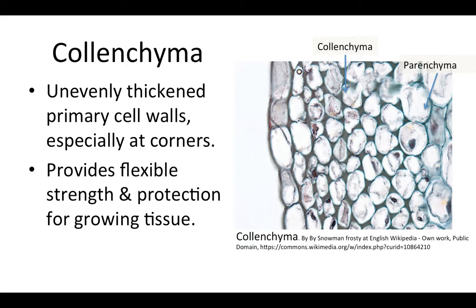We'll move on now to talk about collenchyma. Collenchyma, like parenchyma, only has primary cell walls. So that's a similarity, but the difference is that the cell walls of collenchyma are unevenly thickened. This most commonly occurs at the corners of the cells. On the far right of the picture, you see some large cells with thin cell walls, labeled as parenchyma. Further to the left, getting out closer to the edge of the stem, you see that the cells are a little bit smaller, and they have these very thick dark areas between them. Those dark areas are the cell walls, and you can see that they are irregularly thick because they are only very thick at the corners. In the areas where the two cells almost touch, the cell wall is fairly thin. So those cells are collenchyma.